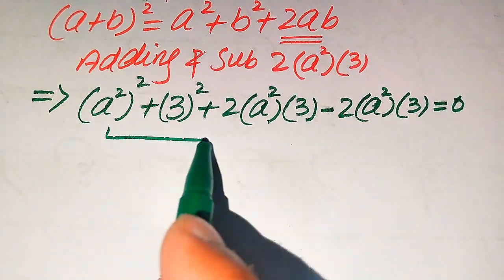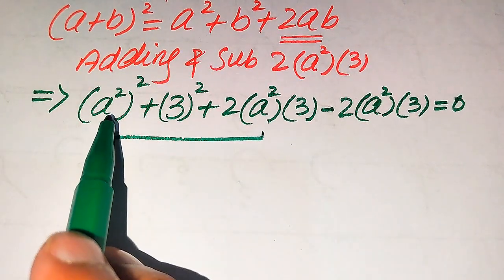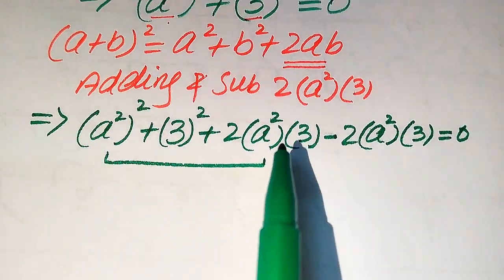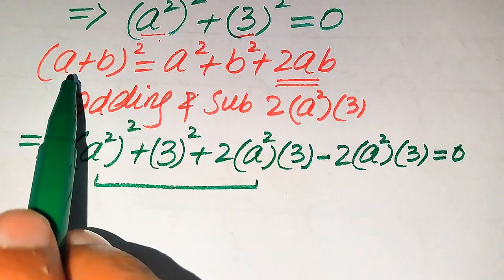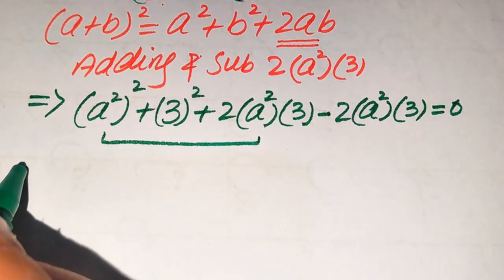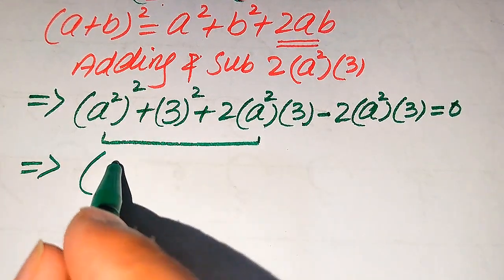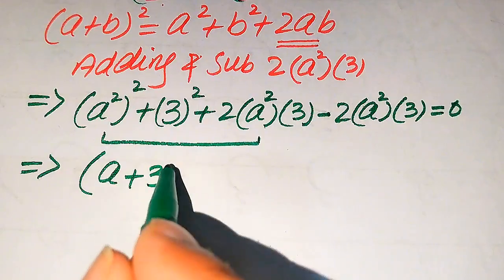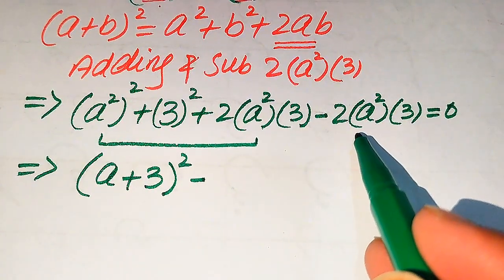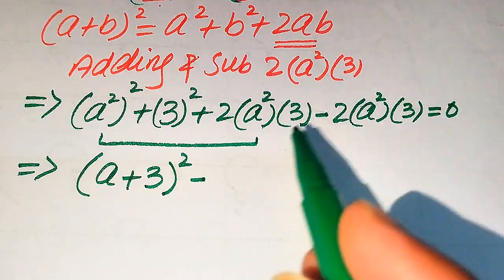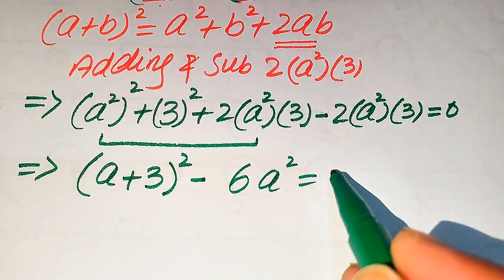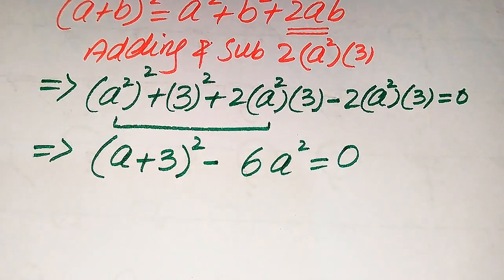We focus on the first three terms: a² + b² + 2ab, which completes to (a+b)². So after completing the square of these terms, it is written as (a²+3)² minus 2 times 3, which becomes 6 times a², and this whole equation equals 0.